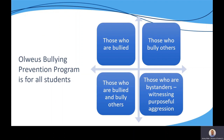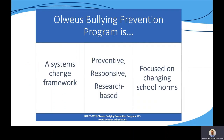The OVEAS Bullying Prevention Program is for all students. There is a great amount of research that highlights the negative impacts of bullying on everyone involved, including bystanders. Bystanders and witnesses are crucial to the success of the program and the key to changing a school's climate. OVEAS is a system change framework — a universal, school-wide effort involving all adults and students in a school community.